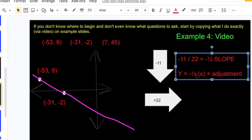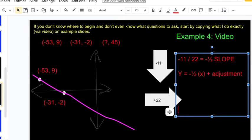How do I figure out what that adjustment is? I'm going to use one of my two points. So let me use the one with the smaller numbers: y is negative 2 when x is negative 31.